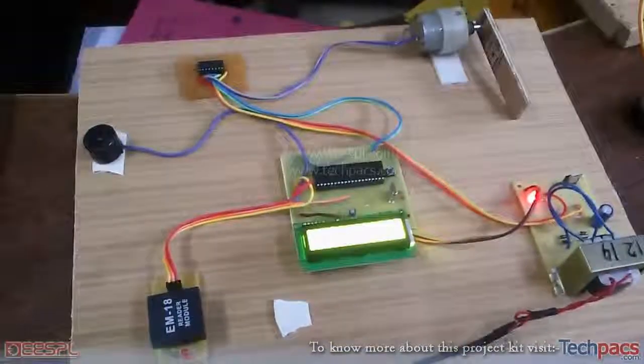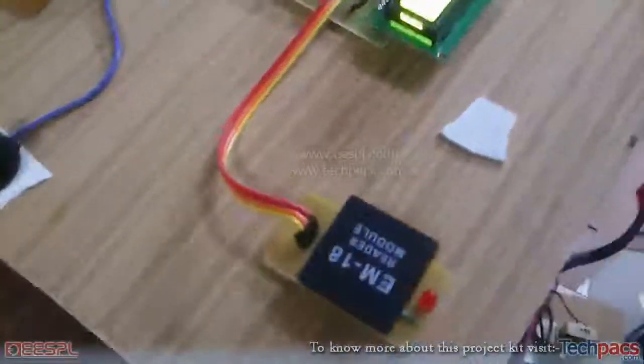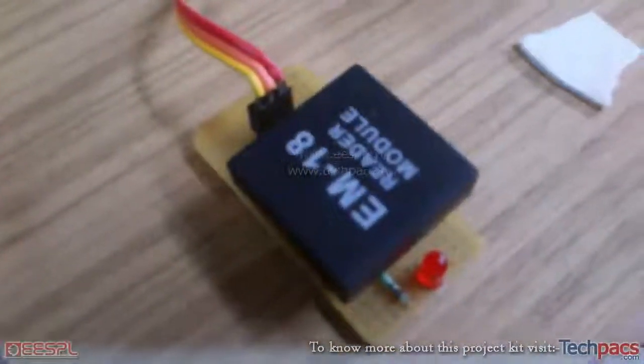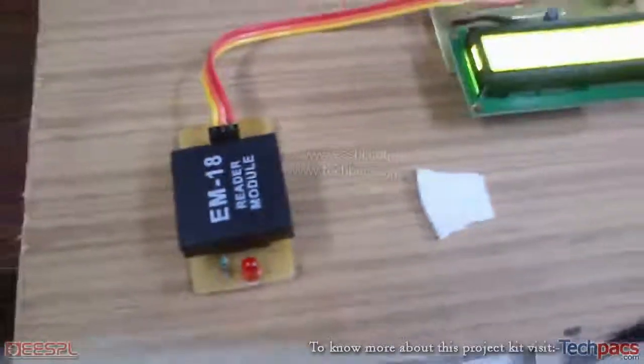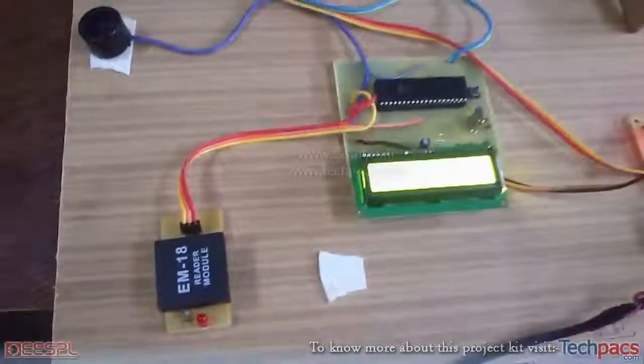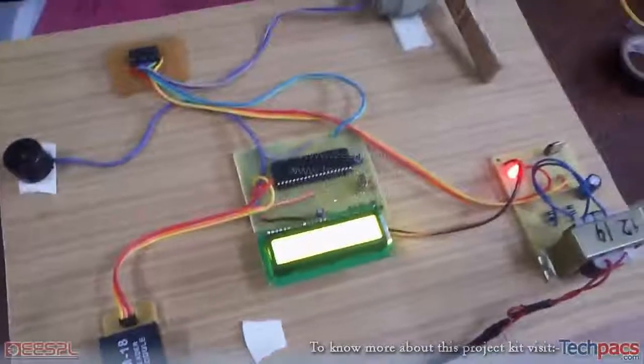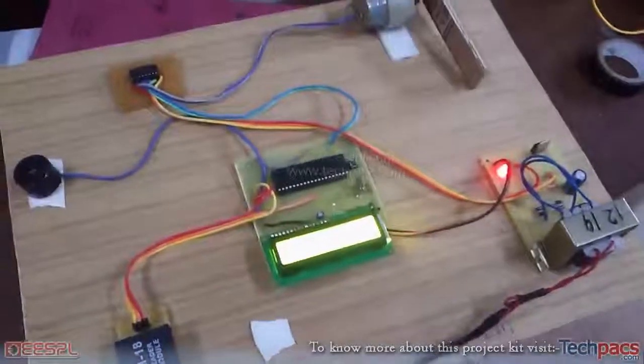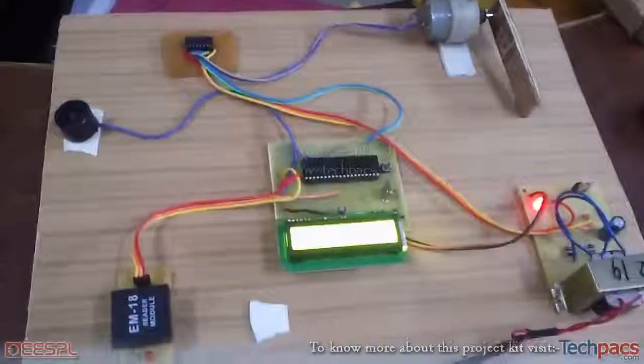RFID, as you know, has a unique ID for every card that works on electromagnetic waves. So the automated toll plaza, what it does is that particular cars that are to pass from the toll plaza...